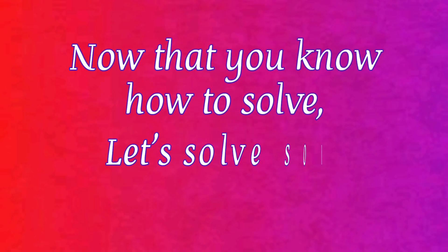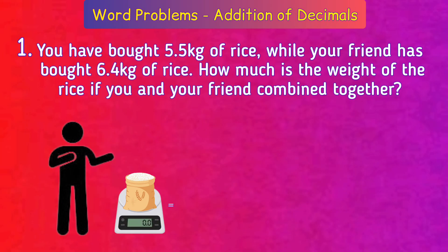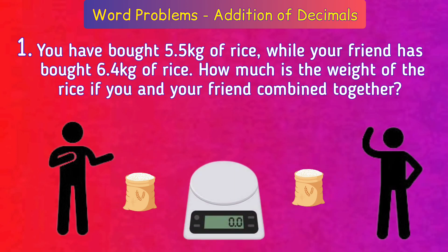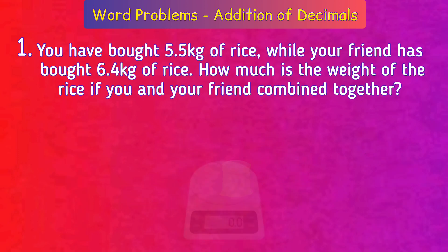Now that you know how to solve, let's solve some word problems. Problem number one: You have bought 5.5 kg of rice, while your friend has bought 6.4 kg of rice. How much is the weight of the rice if you and your friend combined together?